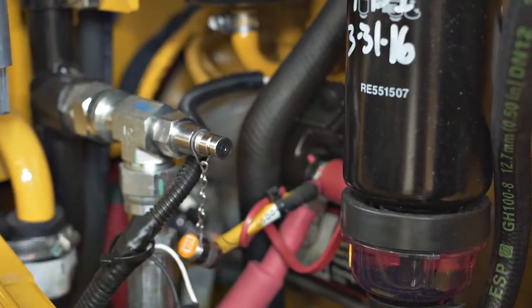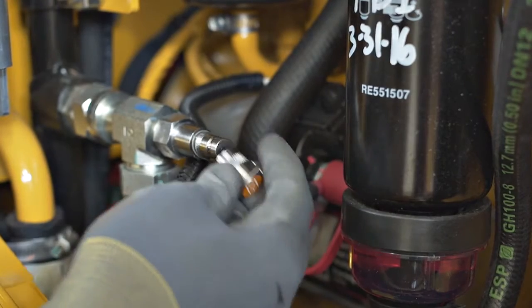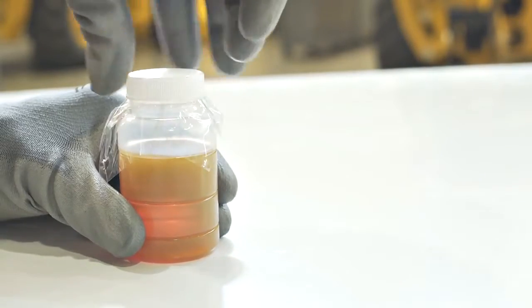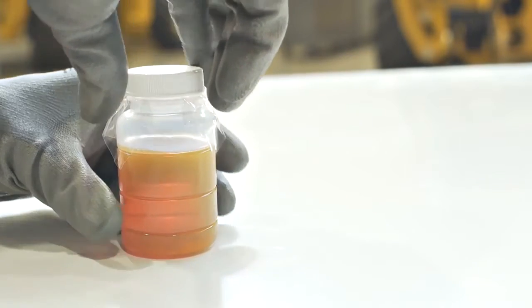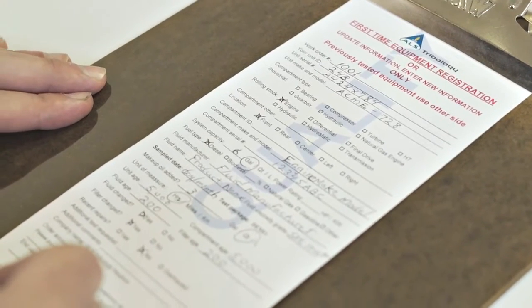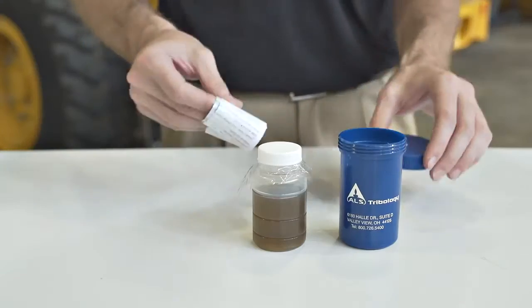Once a representative sample has been obtained, remove the probe tube from the sampling port and immediately seal the lid to the container. When properly performed, the oil sample will be warm, indicating that a representative sample has been obtained and all stagnant fluid was removed during the purge process.